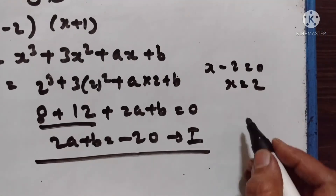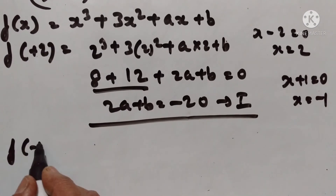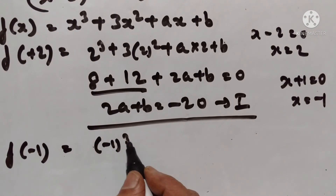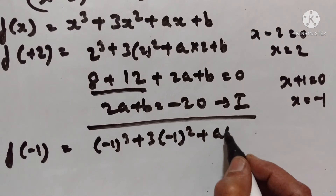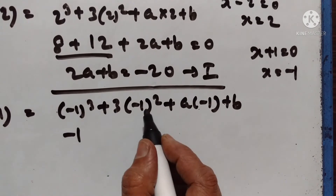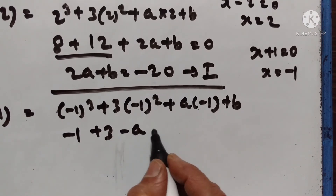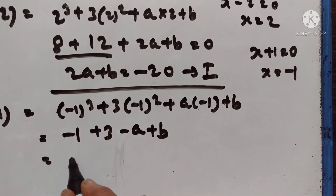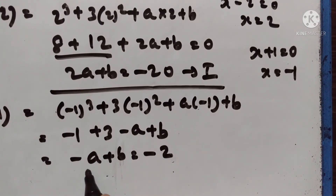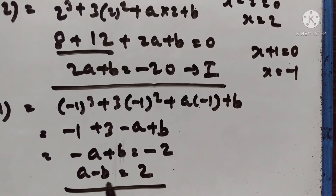Now take x + 1 = 0, so x = -1. Since x + 1 is a factor, f(-1) = 0. So (-1)³ + 3(-1)² + a(-1) + b = 0. (-1)³ = -1, (-1)² = +1, and a(-1) = -a. So -1 + 3 - a + b = 0, giving -a + b = -2, or a - b = 2. The two equations are: 2a + b = -20 and a - b = 2.